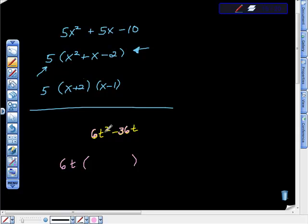6t times what is 6t squared? And of course that's t. And 6t times what is negative 36t? And of course that's negative 6. And we have this thing factored out, don't we?